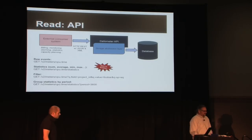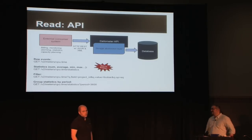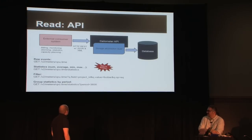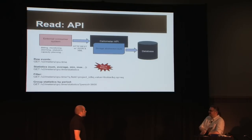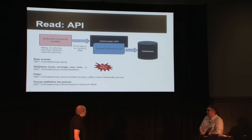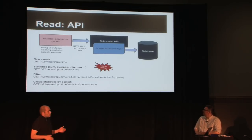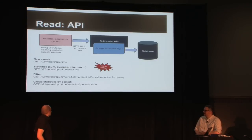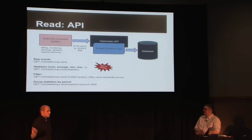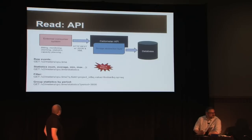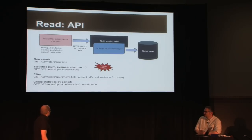The last part is the API. Once you store a lot of meters, you want to read them back. We use the same storage abstraction layer so you can use the same database backend. We did a lot of changes in Grizzly — we built version 2 of the API. When we built version 1, we had only one view, which was billing, and we didn't really know where we were going. Now we have a better view, so we simplified the API a lot. We now merge statistics retrieval into only one call because it's less costly.